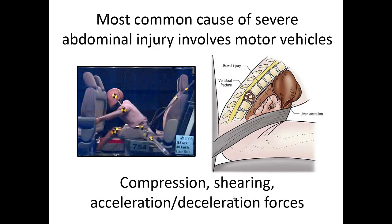The most common cause of severe abdominal injury usually involves motor vehicle crashes. In a crash, the compressive force from rapid deceleration can compress organs against the backbone. Hollow organs act just like a balloon and can burst, while solid organs are solid and can crack or rupture. Any kind of compressing, shearing, or acceleration-deceleration forces can be very severe on abdominal organs.